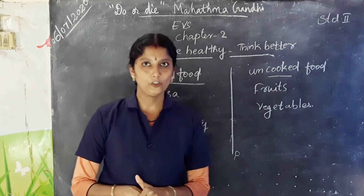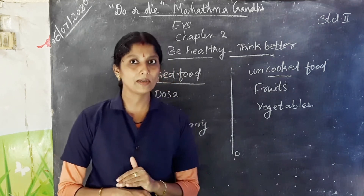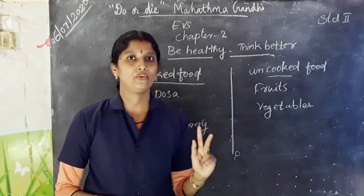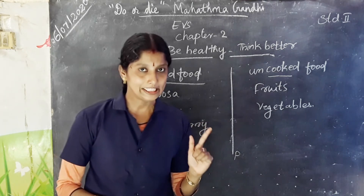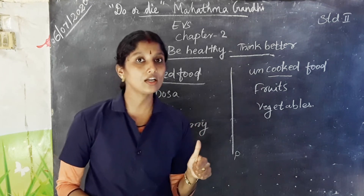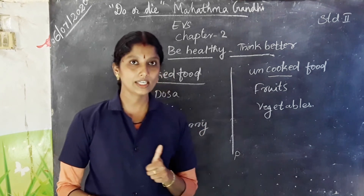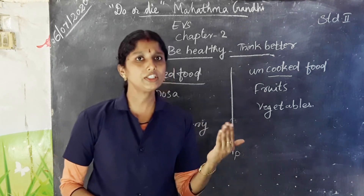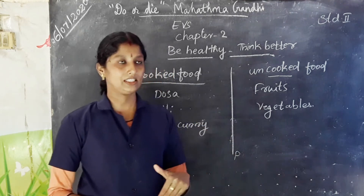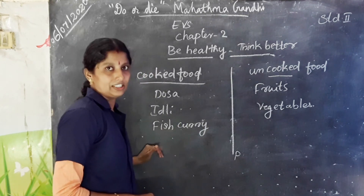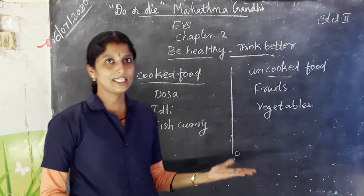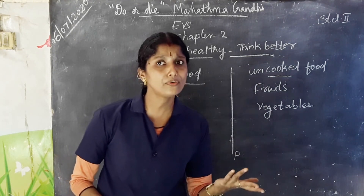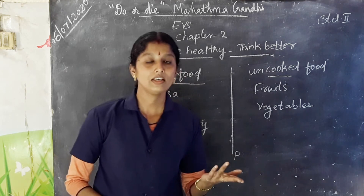Why do you eat food? Food gives us energy. Food helps us to grow. Food protects us from diseases. Food helps us to build our body muscles. Which food do we cook and eat? Rice, dosa, idli, fish curry, meat — these are examples of cooked food. Can you say some examples of uncooked food? Fruits and vegetables.